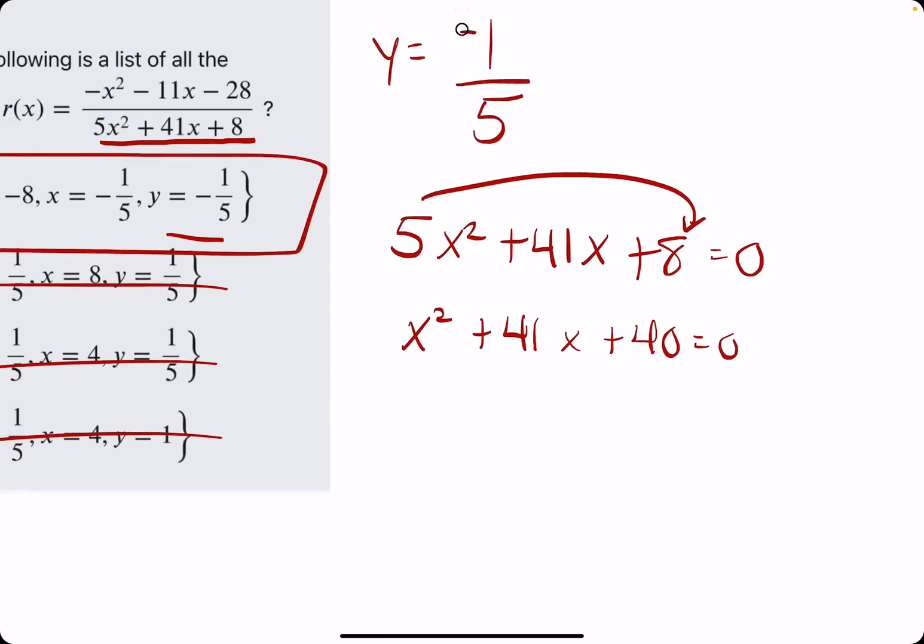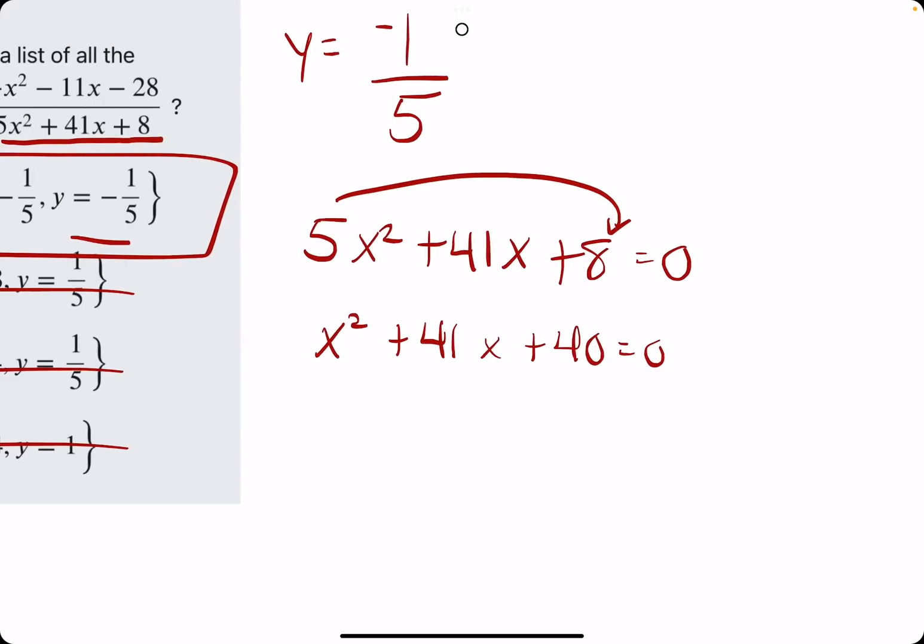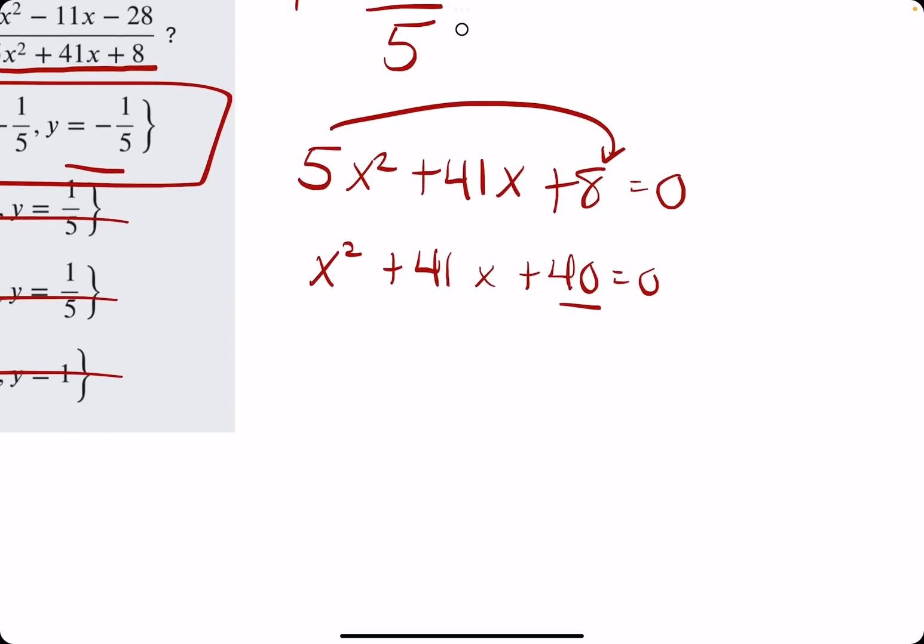If you need more help on factoring, I would recommend just watching other videos and getting more practice. The method I'll use is called the slip and slide method or slide method. What I'll do is take the 5 times the 8, so we get 40 on the end. That makes it so the coefficient of the x squared term is 1.